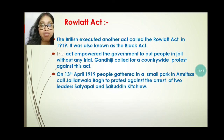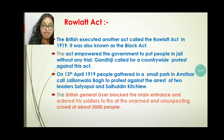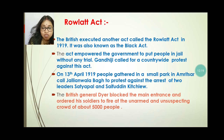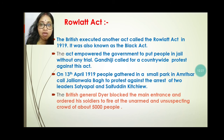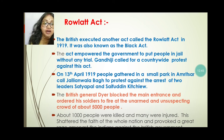On 13th April 1919, people gathered in a small park in Amritsar called Jallianwala Bagh to protest against this act and against the arrest of leaders Satyapal and Saifuddin Kitchlew. British General Dyer blocked the main entrance of the park and ordered his soldiers to fire at the unarmed and unsuspecting crowd. More than 5,000 people were present there in that small park, and about 1,000 people were killed and many were injured by this firing. This shattered the faith of the whole nation and provoked a great fight against the British.